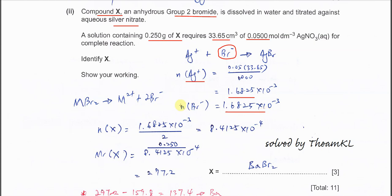One thing you need to know is when the Group 2 bromide dissolves, it will form one mole of cation and two moles of bromide. That's why the moles of X must be half of the bromide. Therefore it's 8.4125 × 10⁻⁴.